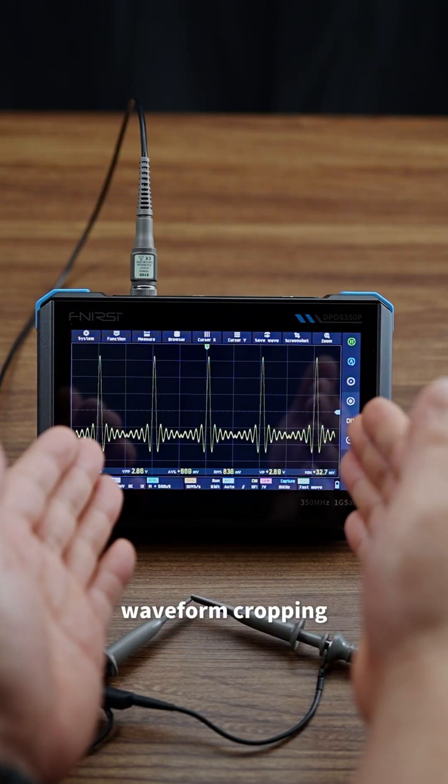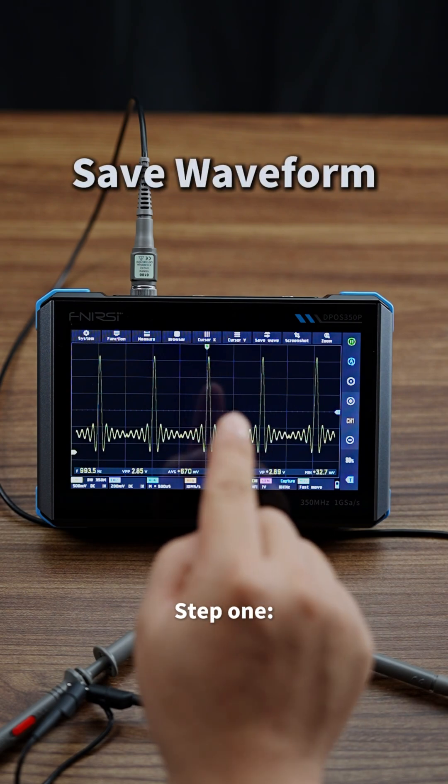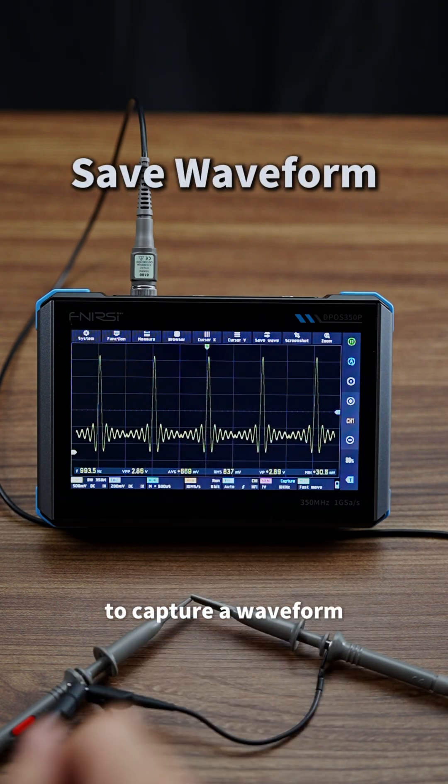How to Use the Oscilloscope's Waveform Cropping Output. Just a few steps and you'll get it. Step 1: Use the Oscilloscope to capture a waveform.